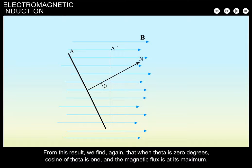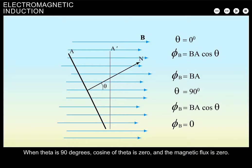From this result, we find again that when theta is zero degrees, cosine of theta is one, and the magnetic flux is at its maximum. When theta is 90 degrees, cosine of theta is zero, and the magnetic flux is zero.